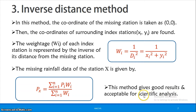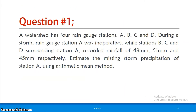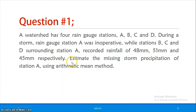Now we look at a worked example using the arithmetic mean method. A watershed has 4 rain gauge stations A, B, C, and D. During a storm, rain gauge station A was inoperative while stations B, C and D recorded rainfall of 48 mm, 51 mm and 45 mm respectively. Estimate the missing storm precipitation at station A using the arithmetic mean method.